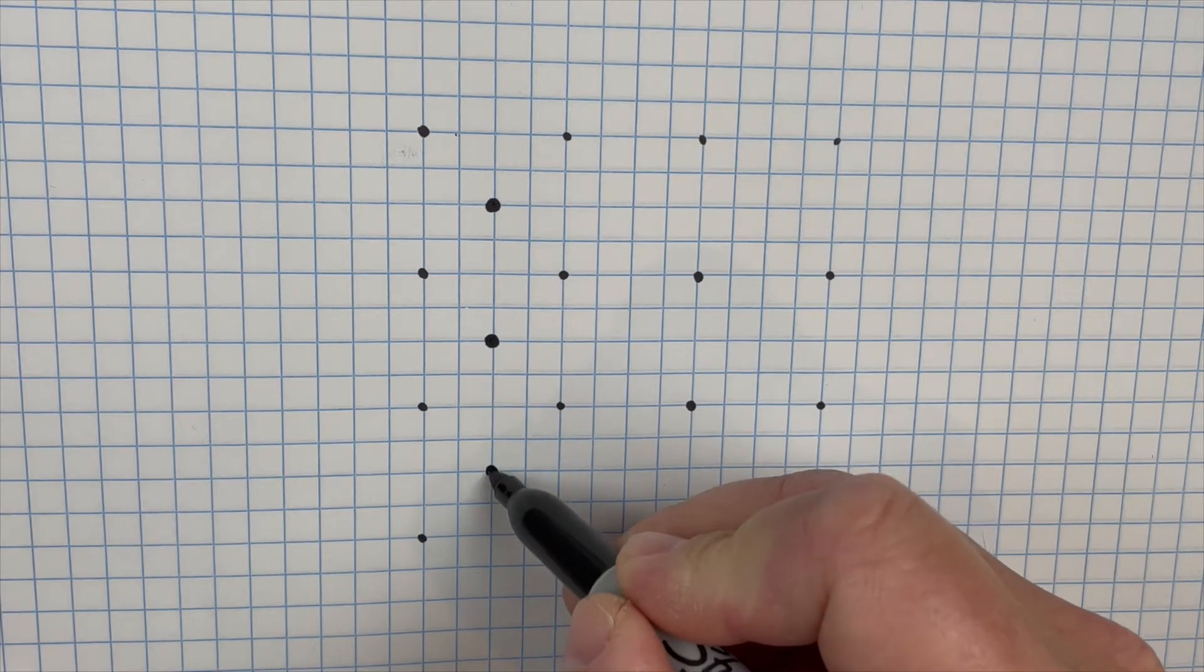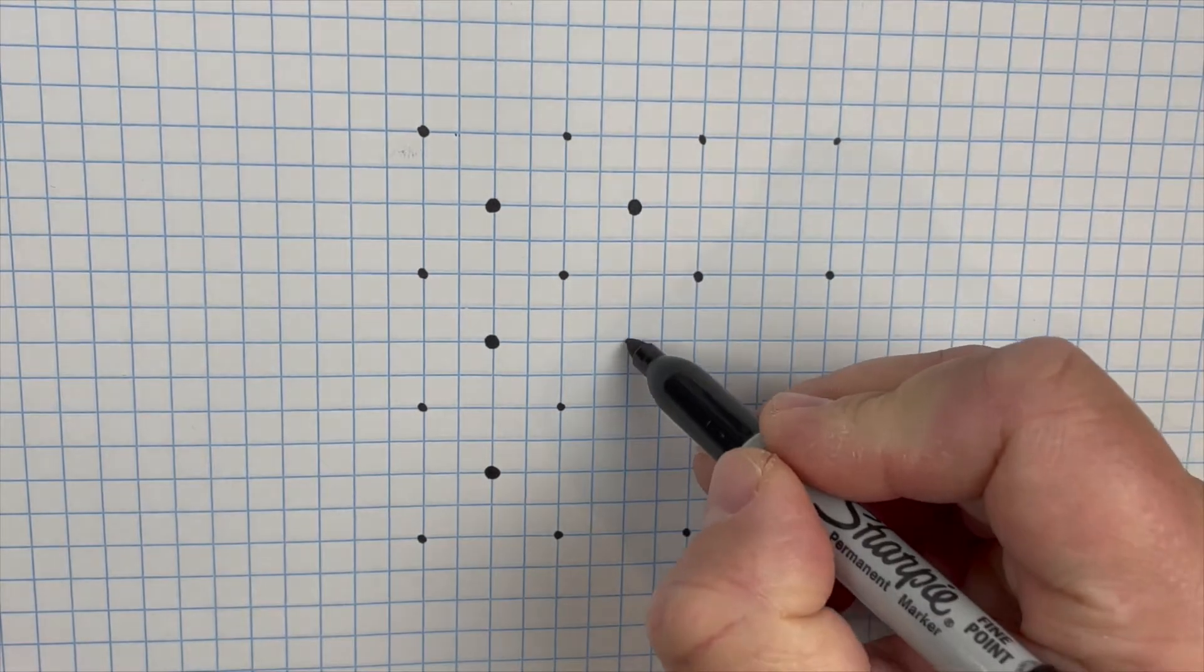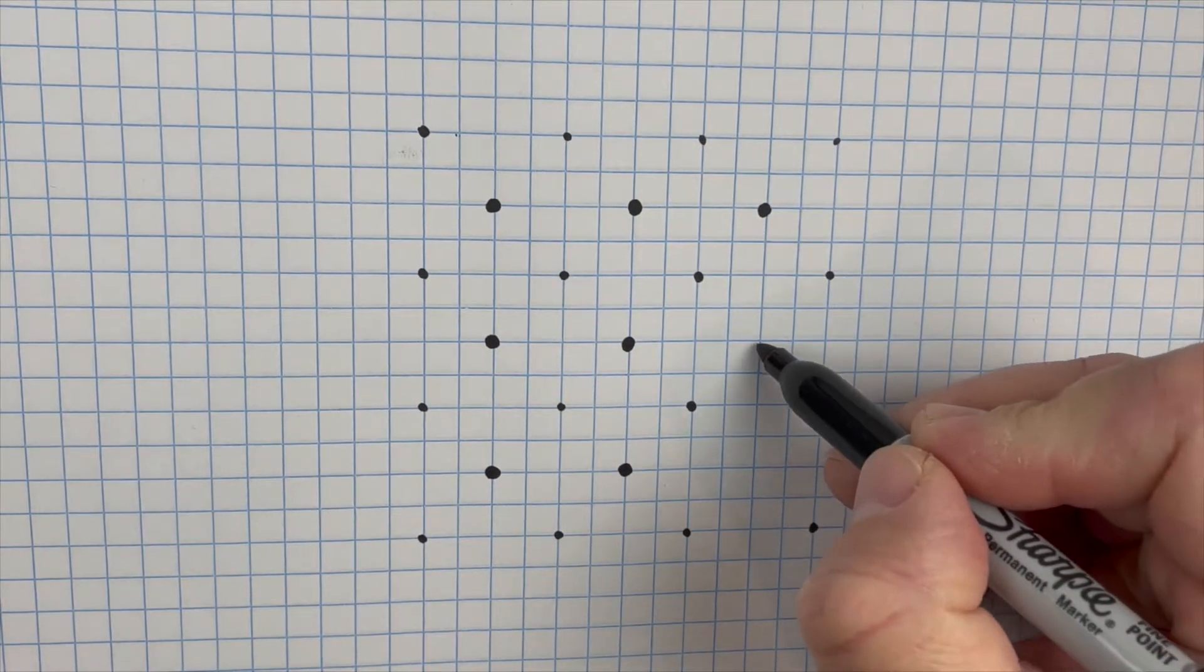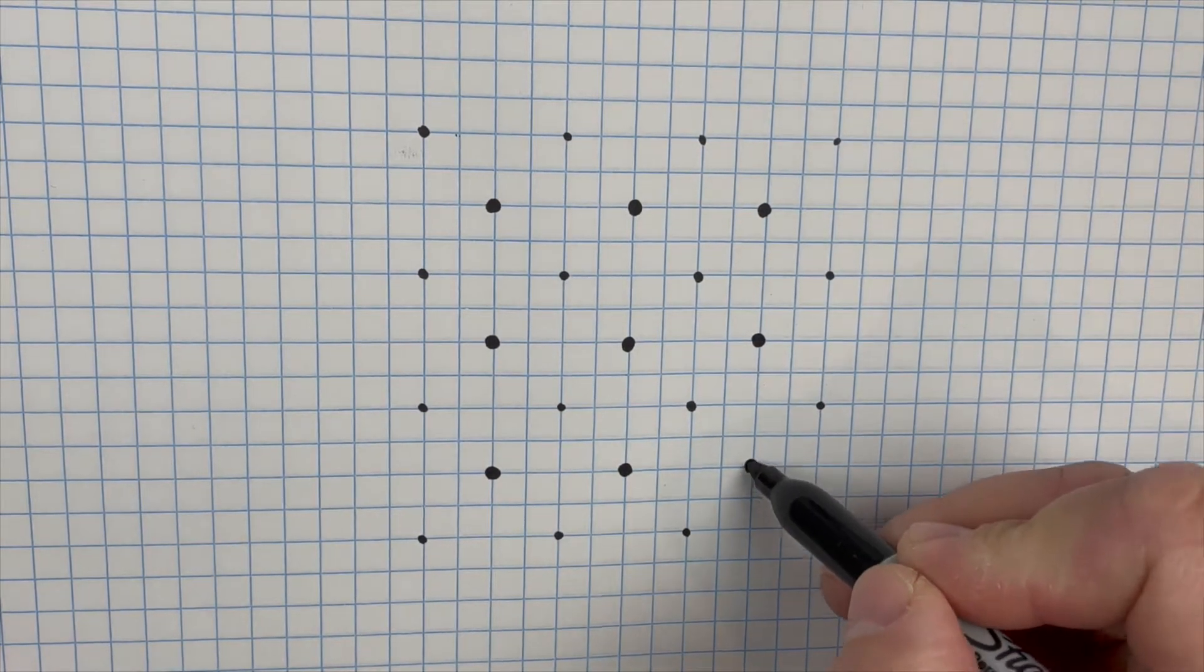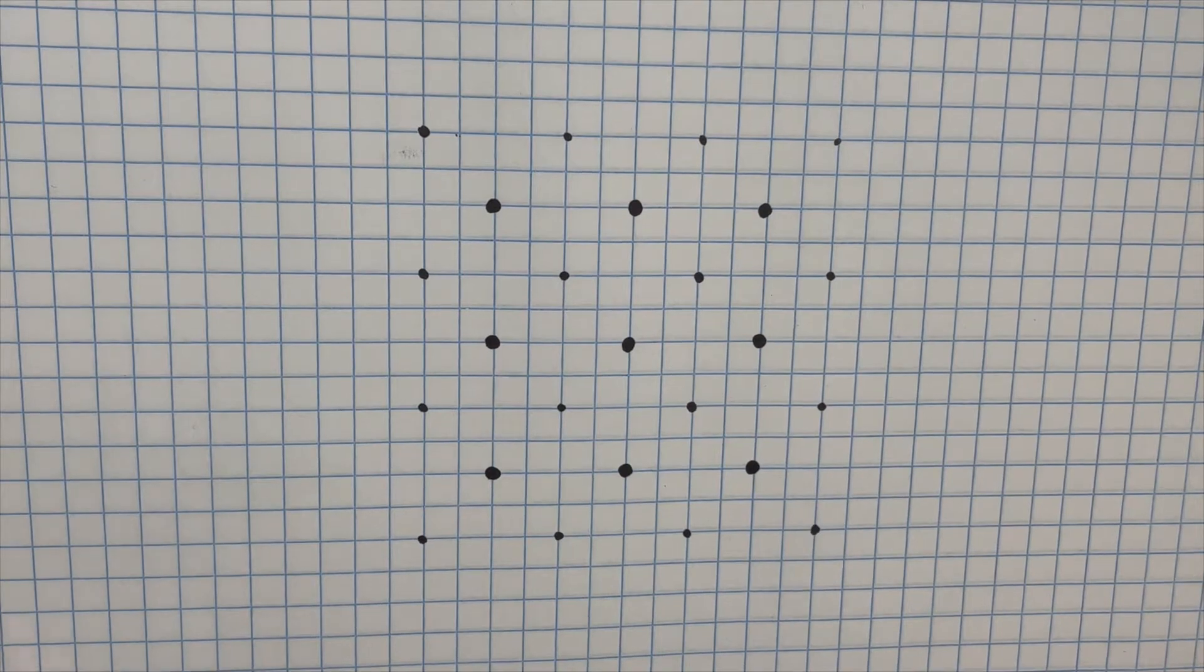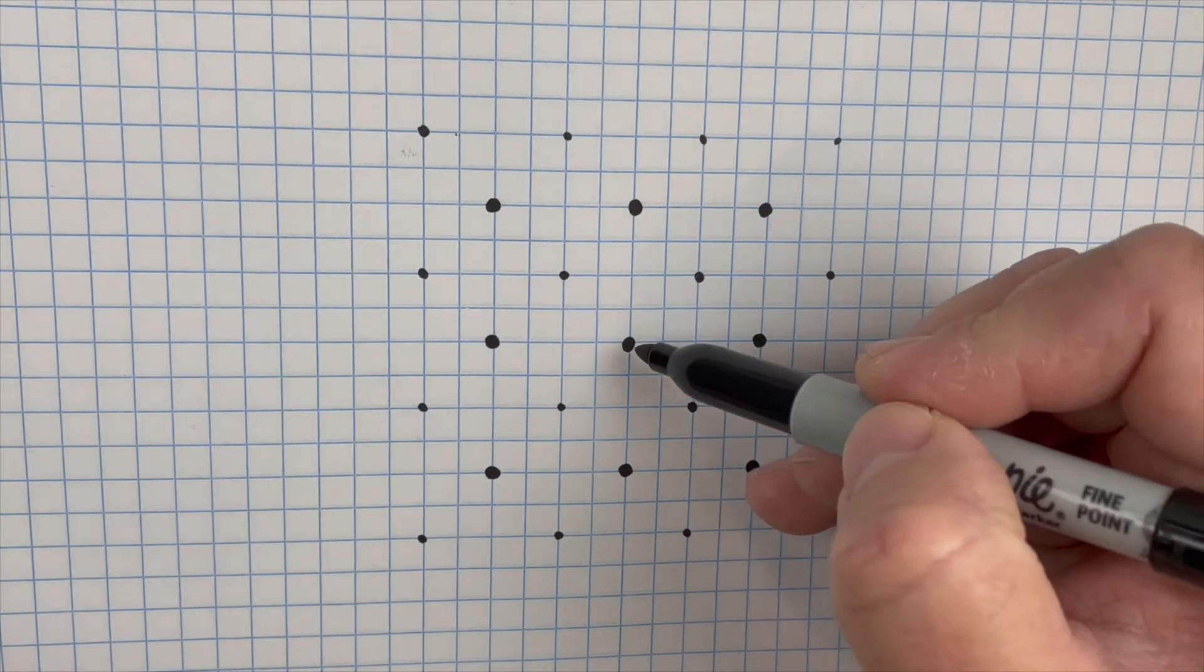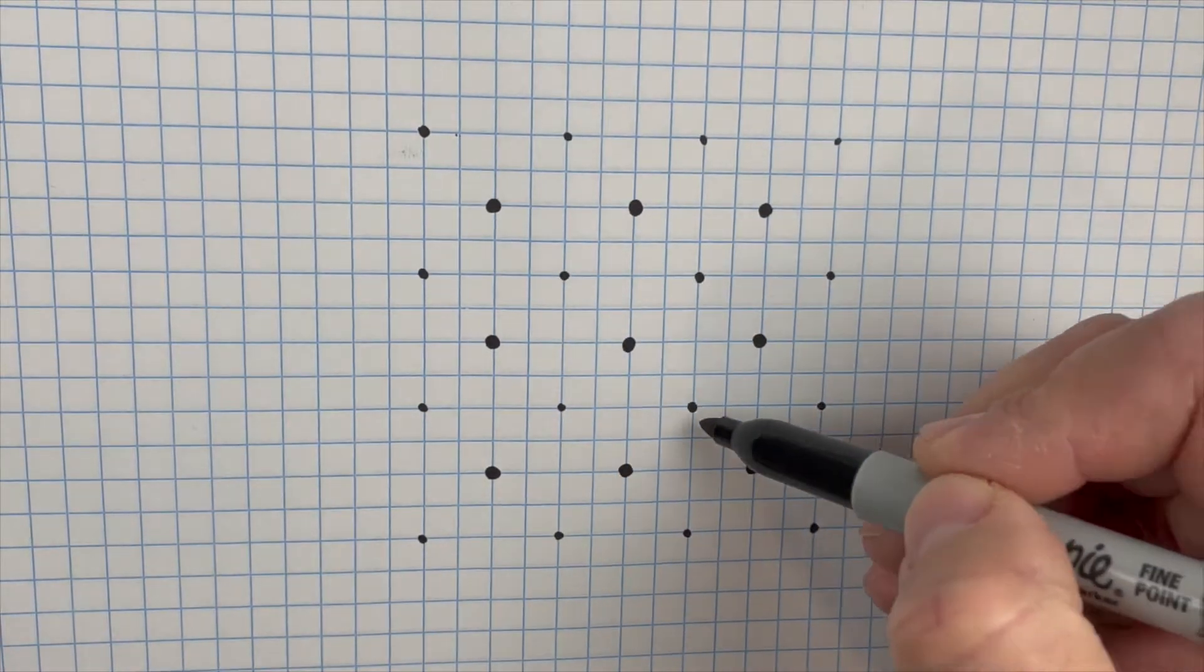You're gonna make another dot. Now these, to make your life a lot easier when you do this drawing, make these a little bit darker or make them bigger. So the other thing you could do is use a very fine marker for the first dots and then maybe a thicker marker for these.